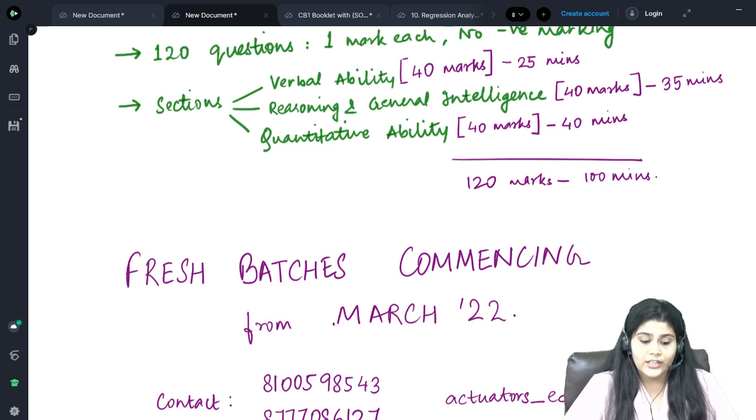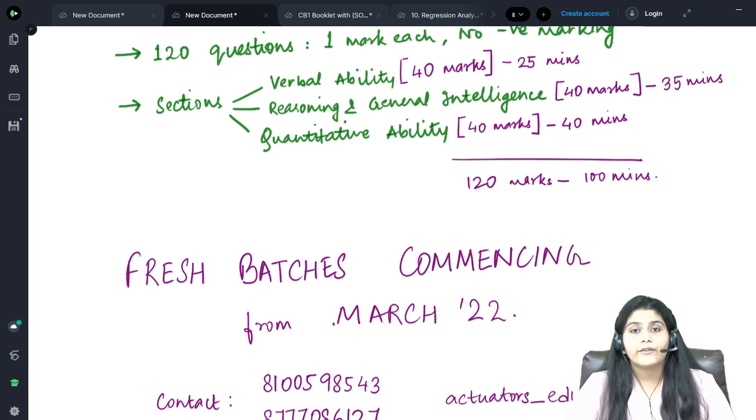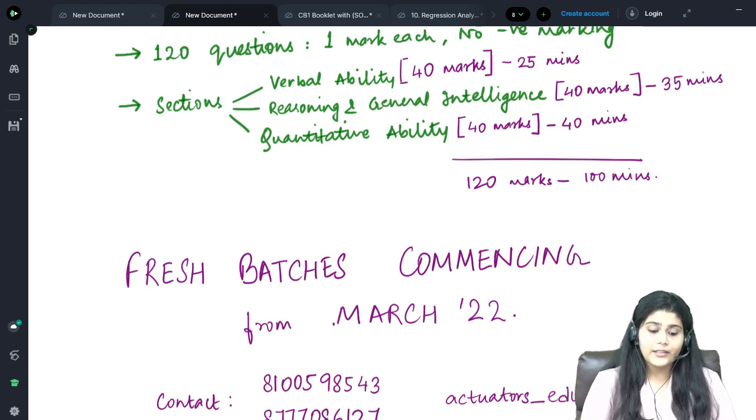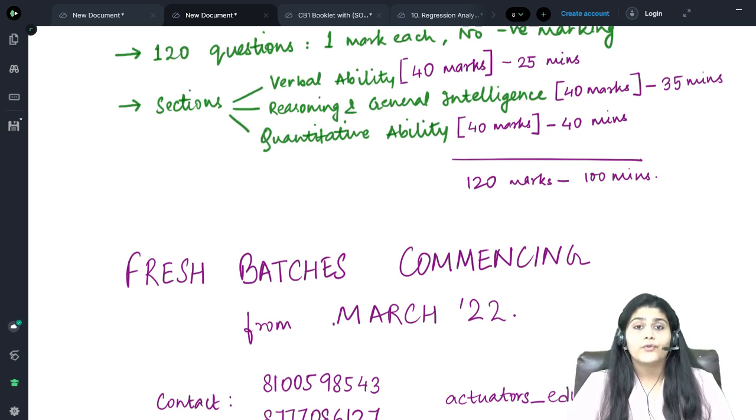After that, the last section is the Quantitative Ability section, which is for 40 marks and you get 40 minutes to attempt it. In the Reasoning and General Intelligence section, you will face questions such as logical reasoning questions on syllogism, blood relations, data series, etc., as well as data interpretation questions on line charts, pie charts, bar charts, and all.